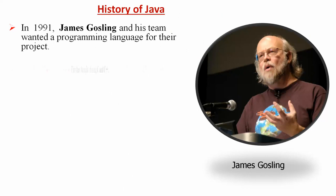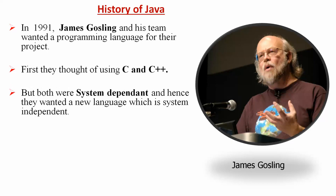First, they thought of using C or C++ for their project, but both were system dependent and hence they wanted a new language which is system independent. What is system dependent? If a program is written in Windows operating system using C or C++, the same program cannot run in any other operating system like Unix, Mac, or Linux. This phenomenon is called system dependency.